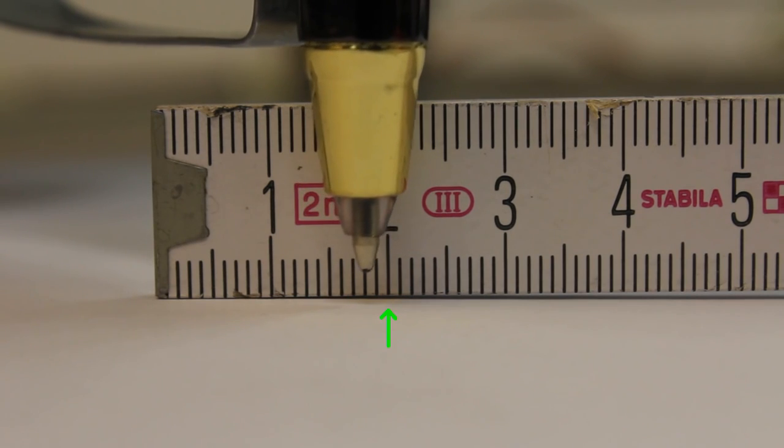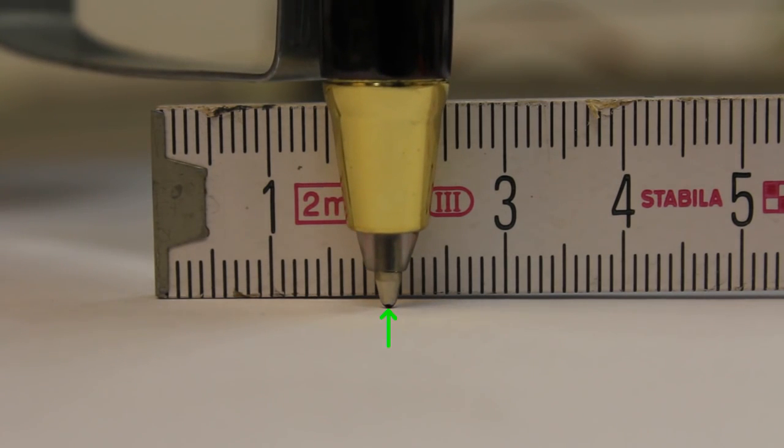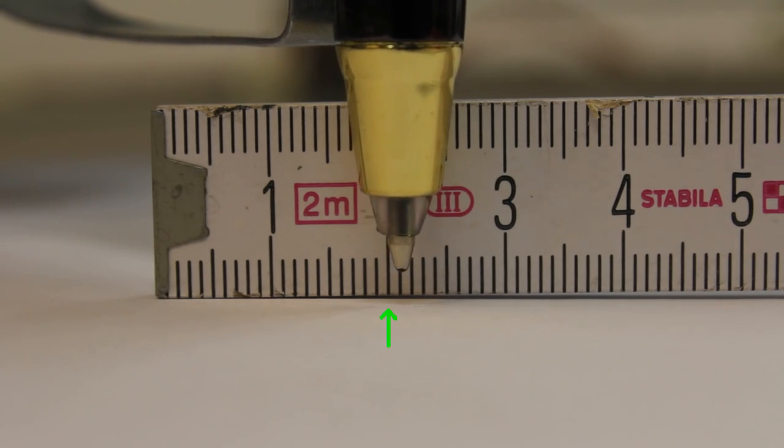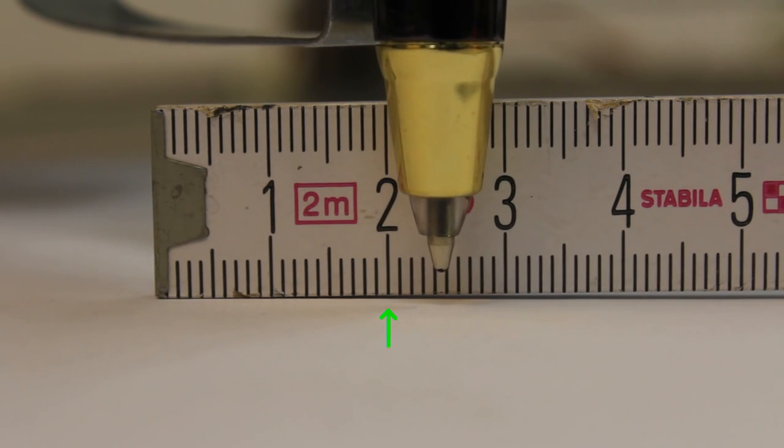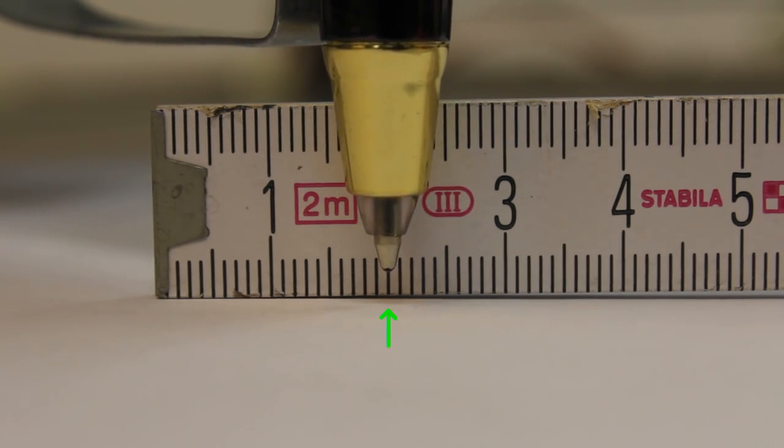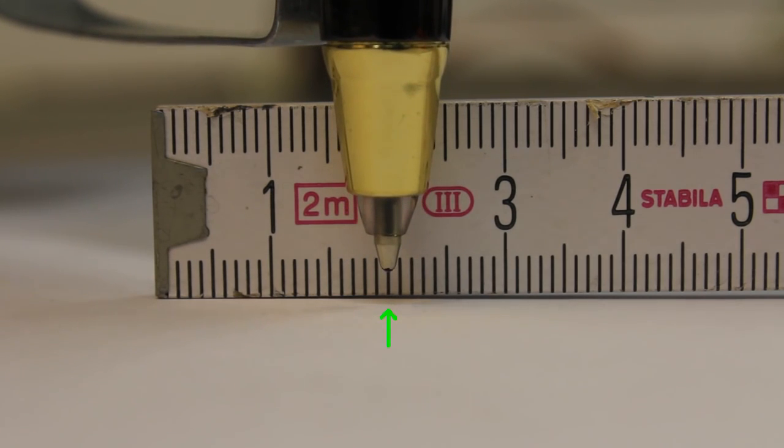The second criterion for the quality of a CNC machine is the accuracy while driving the pen to one point from different directions. As you can see, it is performing that test with almost no visible error.